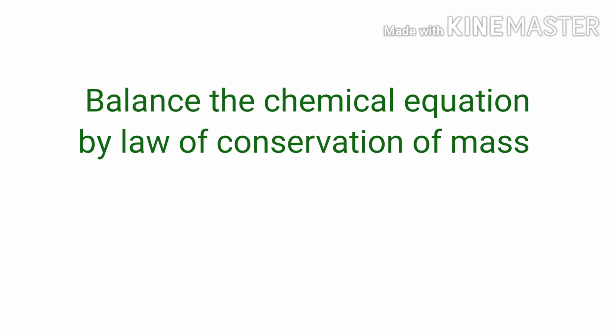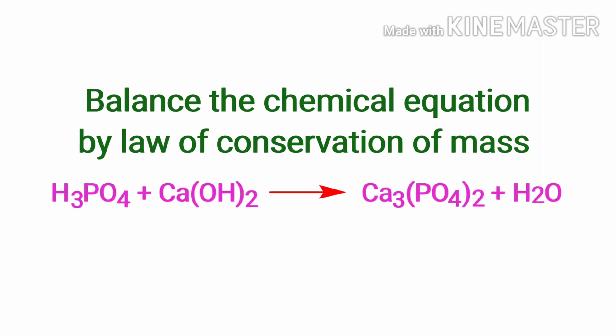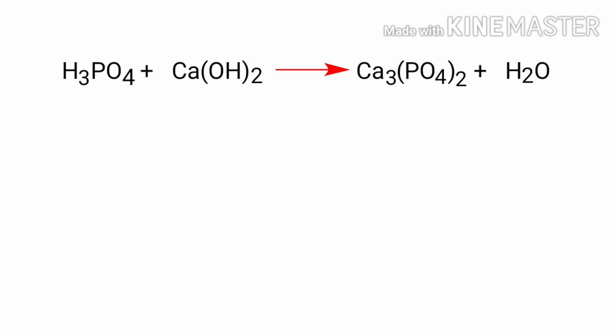Balance the chemical equation by law of conservation of mass. Phosphoric acid plus calcium hydroxide gives us calcium phosphate plus water. In this equation, the reactants are phosphoric acid and calcium hydroxide, and the products are calcium phosphate and water.